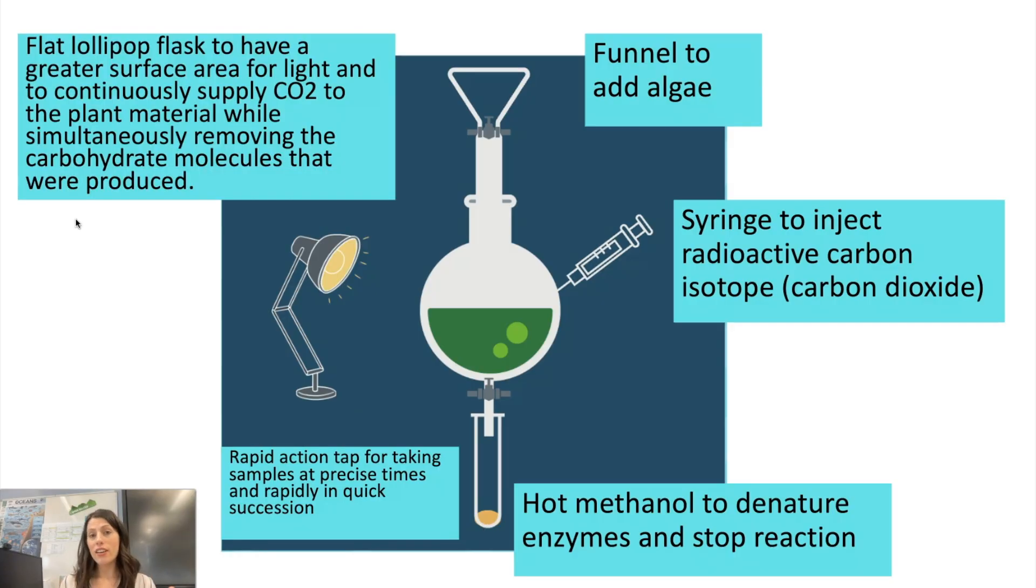So the advantages of the flat lollipop flask are first of all, because it is flat on the two sides, you have this larger surface area. And that means more of the algae will be exposed to light. And therefore, the rate of the light dependent reactions will be faster. And you should therefore see any changes in the light dependent reaction more rapidly as well. The other thing is you can simultaneously be injecting in that carbon dioxide and taking samples at the same time.